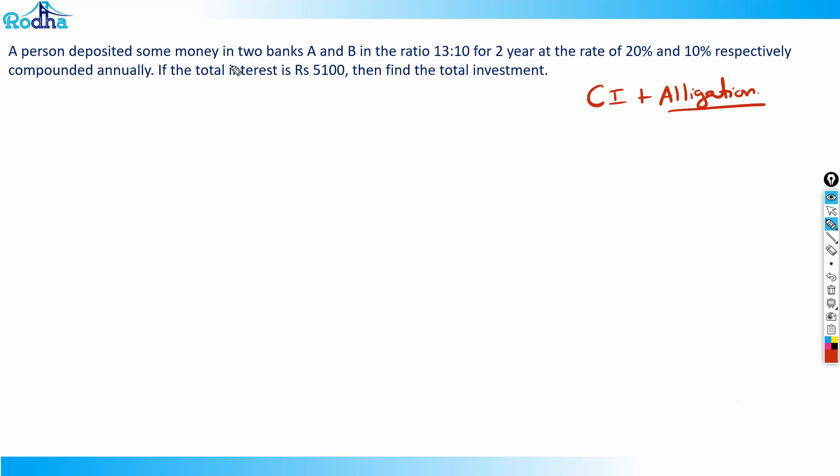A person deposited some money in two banks A and B in the ratio 13:10 for two years at rates of 20% and 10% respectively, compounded annually.